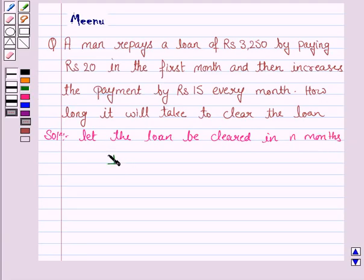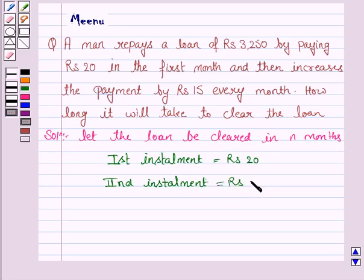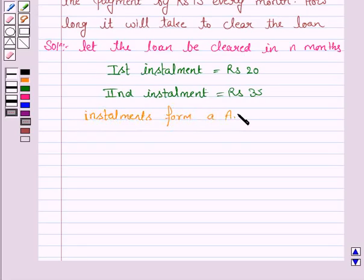We are given that the first installment of the loan is Rs. 20, and then he increases the payment by Rs. 15 every month. So the second installment is Rs. 20 plus 15, that is 35, and so on. These installments form an AP, that is arithmetic progression.